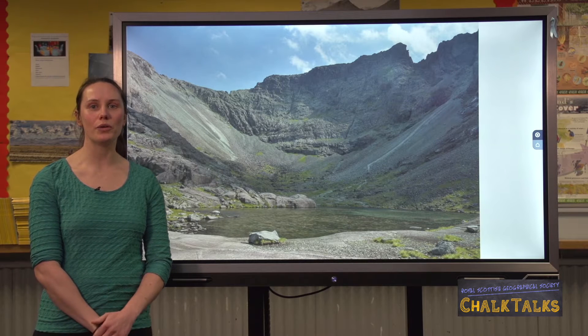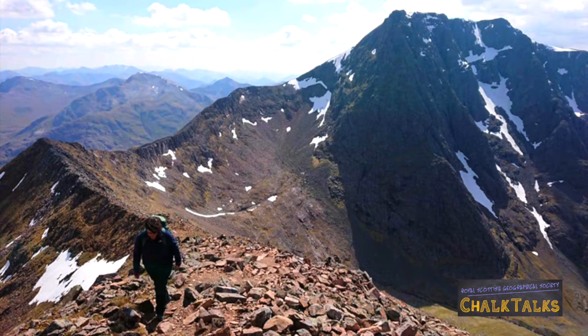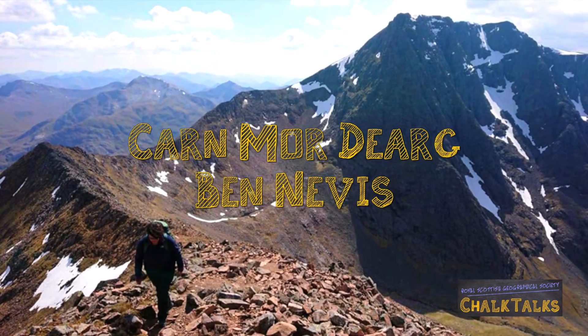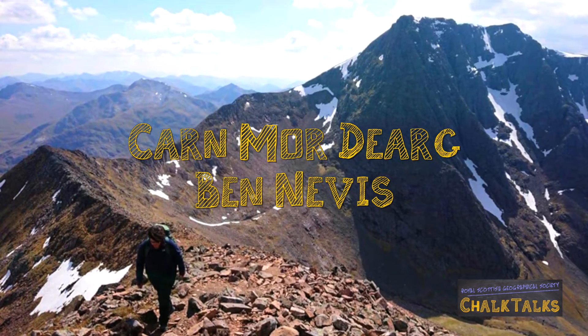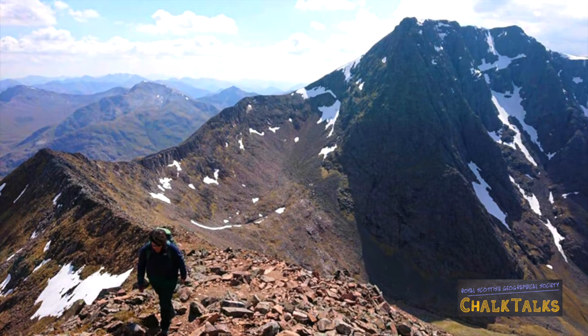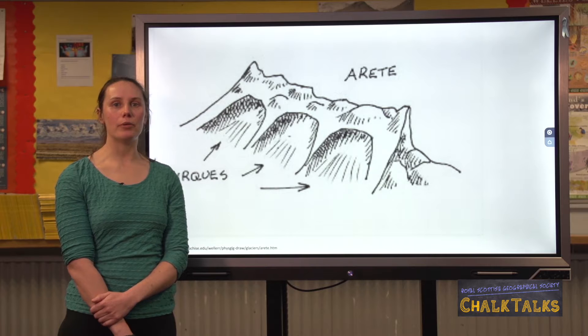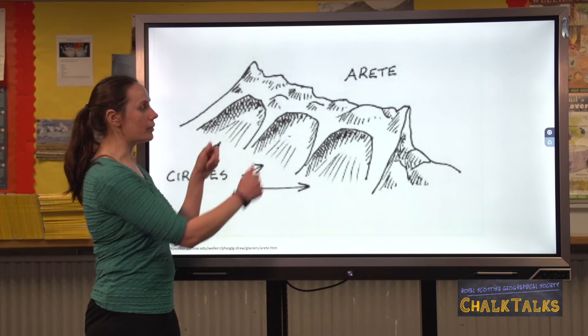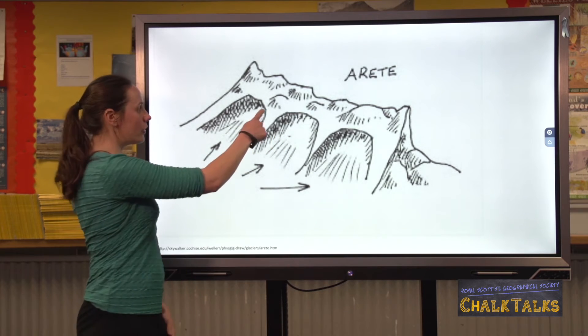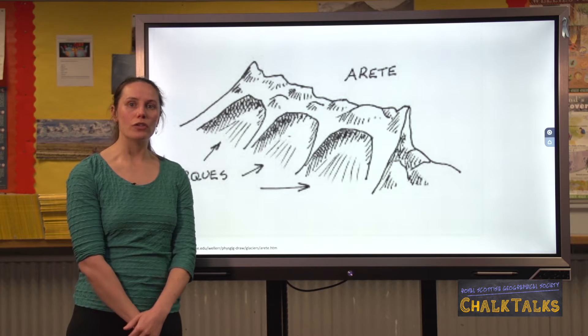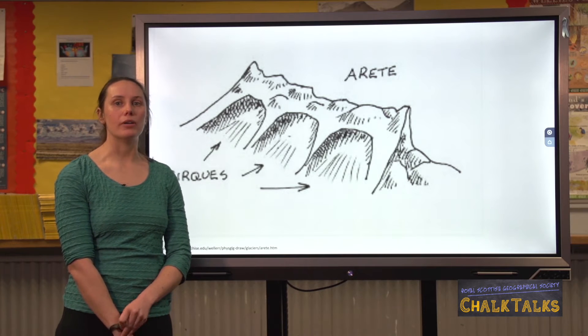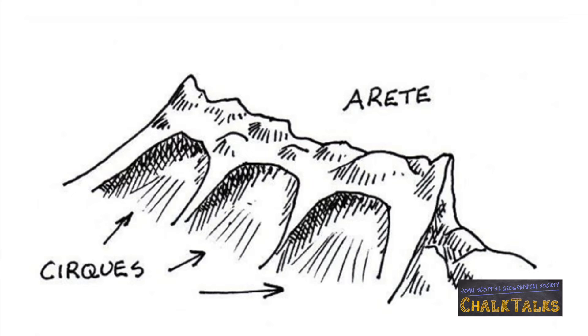Two other glacial erosional features you might be asked to explain are arêtes and pyramidal peaks. If asked about these, you can use what you know about corries in your answer. An example of an arête is Carn Mor Dearg on Ben Nevis. For an arête to form, you need two corries to form close to each other. Plucking and abrasion make the corries bigger and wider, so there's less and less land left in between them. The top of the arête gets steepened by freeze-thaw weathering.